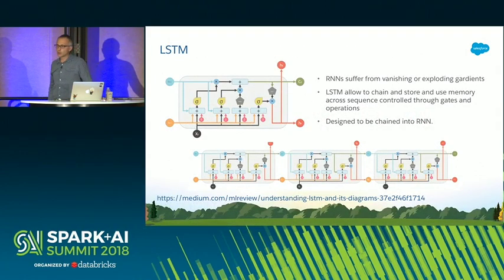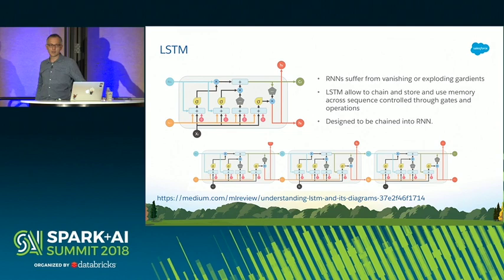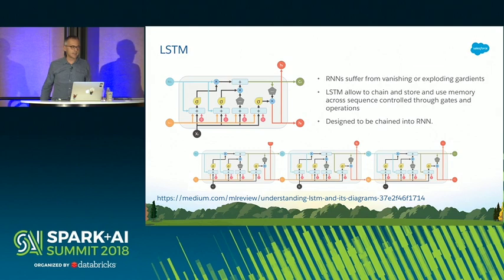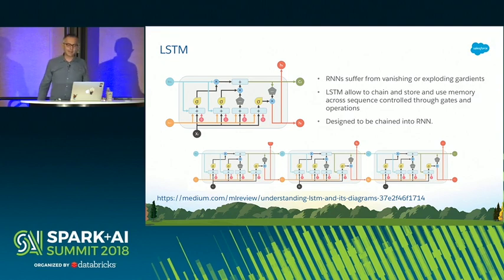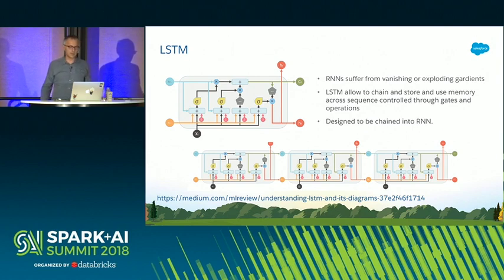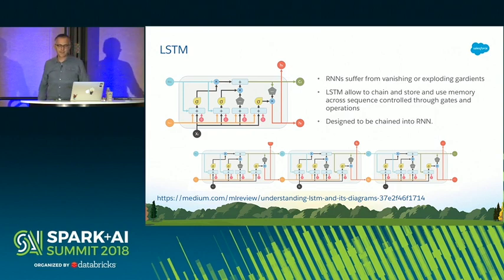Our model needs to process a sequence of words or tokens where previous tokens might matter, but neural networks including recurrent ones are not good at dealing with long sequences due to vanishing or exploding gradients. It is hard to know how much importance to assign to remote inputs because the layers and time steps of deep neural networks relate to each other through multiplication, making derivatives susceptible to vanishing or exploding gradients. The Long Short-Term Memory network, or LSTM, is capable of learning long-term dependencies. LSTM cells are designed to be chained into a recurrent network and allow storing and using memory across the sequence.